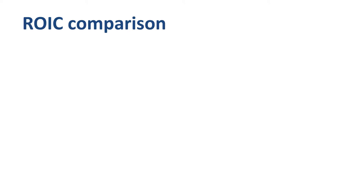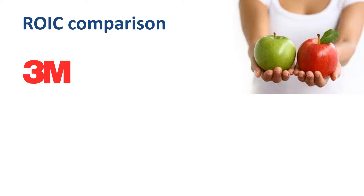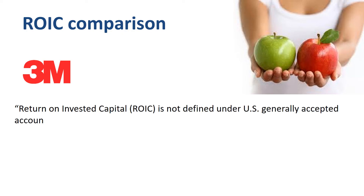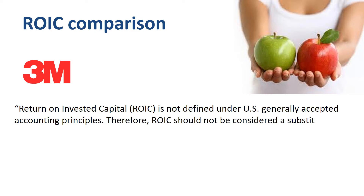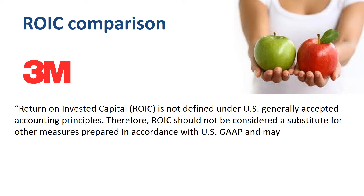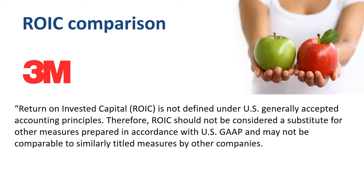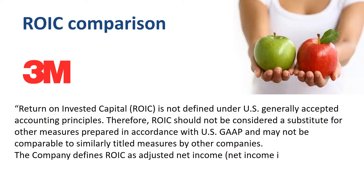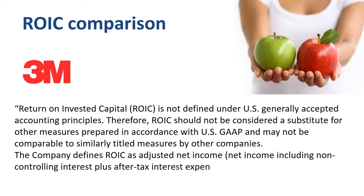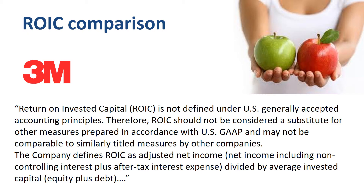Let's compare the way these three companies have defined and calculated ROIC, as we are not looking at apples-to-apples comparisons. 3M has nicely summarized why: return on invested capital is not defined under US generally accepted accounting principles. Therefore, ROIC should not be considered a substitute for other measures prepared in accordance with US GAAP, and may not be comparable to similarly titled measures by other companies. The company defines ROIC as adjusted net income — including non-controlling interest — plus after-tax interest expense, divided by average invested capital (equity plus debt). So 3M's definition is very similar to the semi-official definition shown earlier.